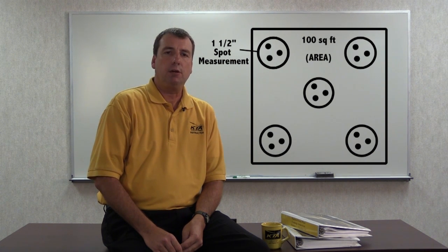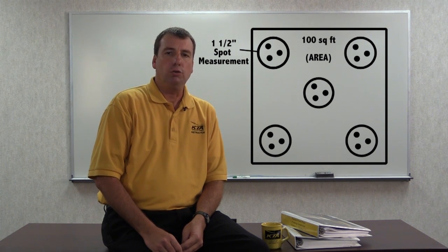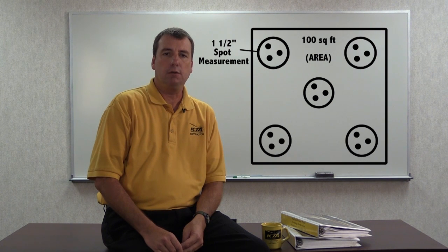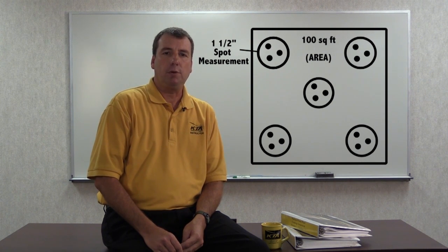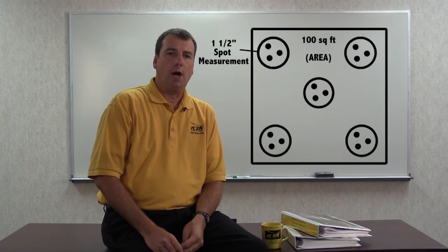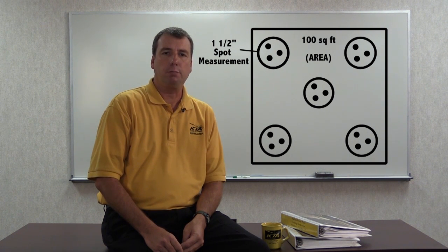A minimum of three gauge readings are obtained in each spot, which is called the spot measurement. Unusually high or low gauge readings that cannot be repeated consistently are discarded. The average of the three acceptable gauge readings is a spot measurement. The total area will have a minimum of 15 gauge readings — for example, five spots with three gauge readings per spot.